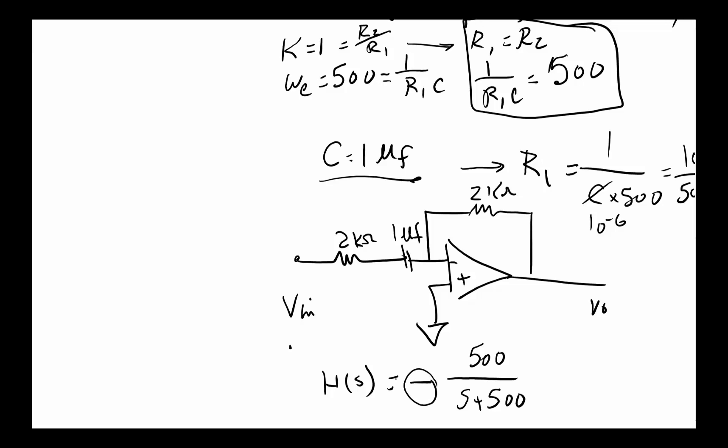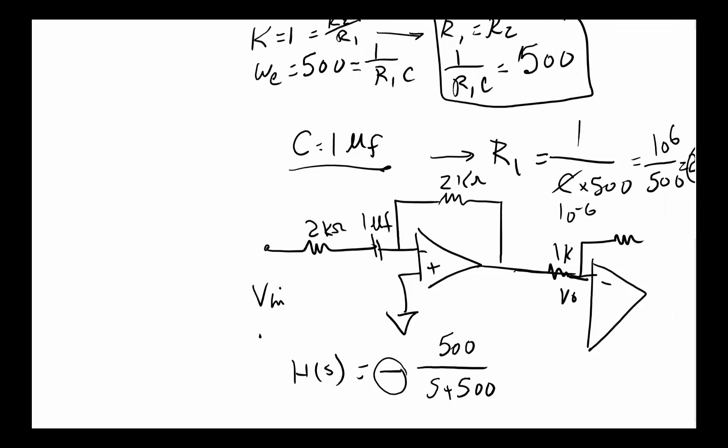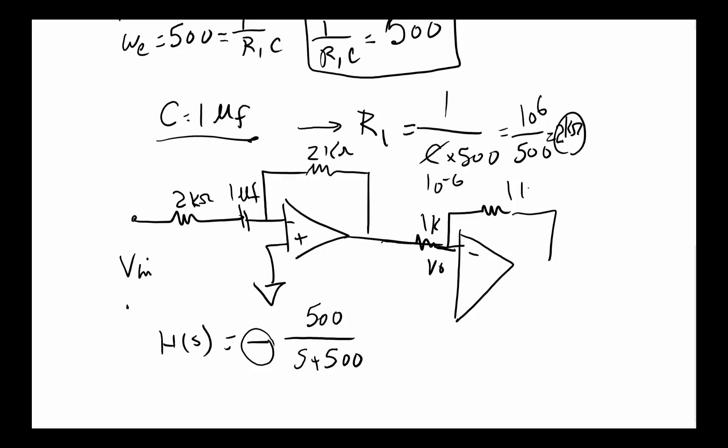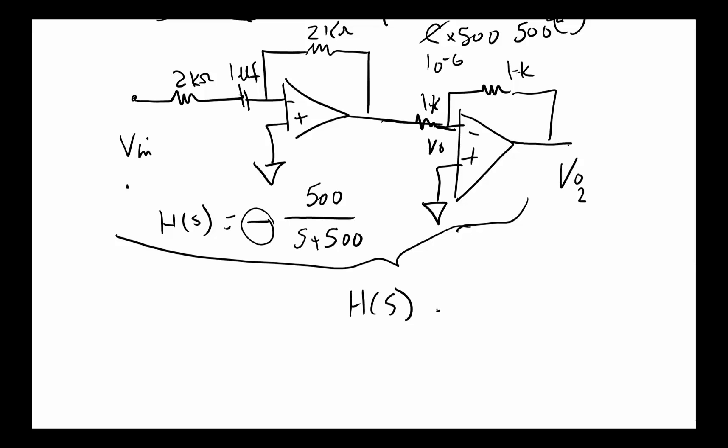Maybe we don't want to invert our input or have a negative gain. How do we correct that? We can rely on what we've done before, which is to build another amplifier with a gain of one. As long as these resistors are the same, you have a gain of one. So now this Vout2, the H(S) for both of these together will be 500 over S plus 500.